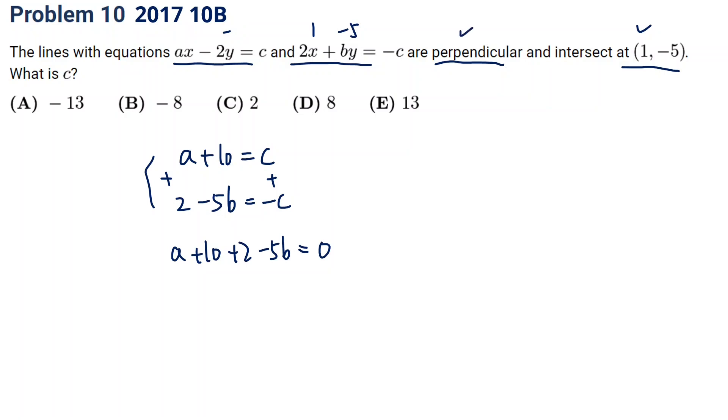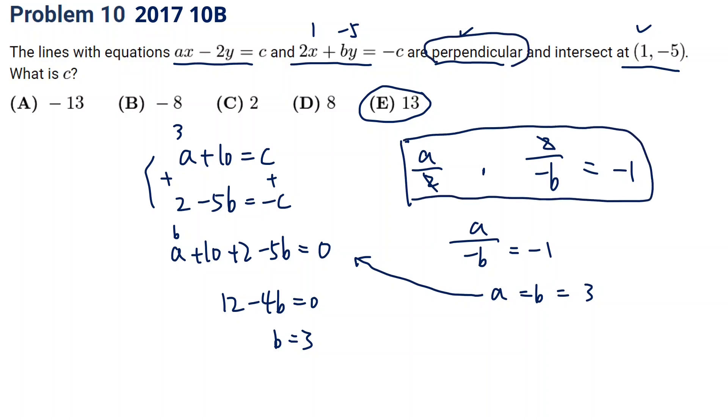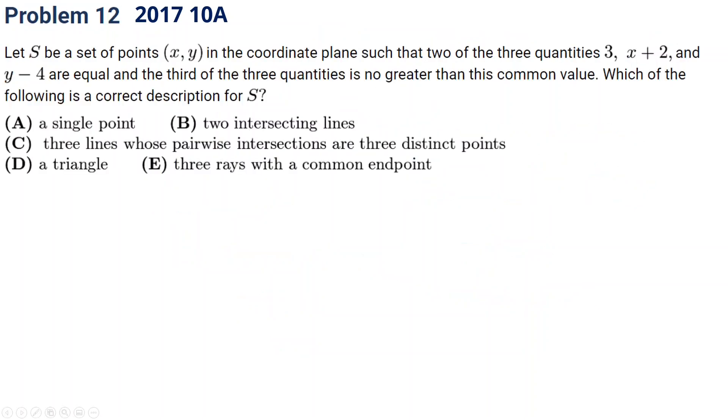And second is the perpendicular. So the first line, the slope is A over 2, and the second line, the slope is 2 over negative B. And we know they multiply together, the perpendicular should equal to negative 1. So which means A over negative B is negative 1, so A over B is 1, so A equals B. And now we have A equals B and we put back into this equation. We're going to have 12 minus 4B equals 0, so B is 3. We have A equals B equals 3. And what is C? So C is equal to 13. So this finally becomes an algebra equation, and we have to know two lines perpendicular have this equation. The two slopes multiplied together is equal to negative 1.